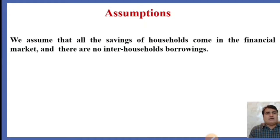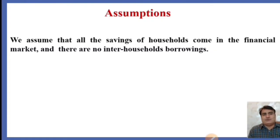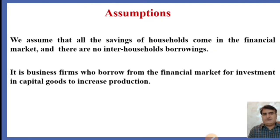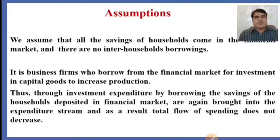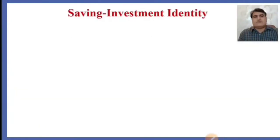We assume that all the savings of households come into the financial market and there is no inter-household borrowing. It is business firms who borrow from the financial market for investment in capital goods to increase production. Through investment expenditure by borrowing, the savings of households deposited in the financial market are again brought into the expenditure stream, and as a result the total flow of spending does not decrease.